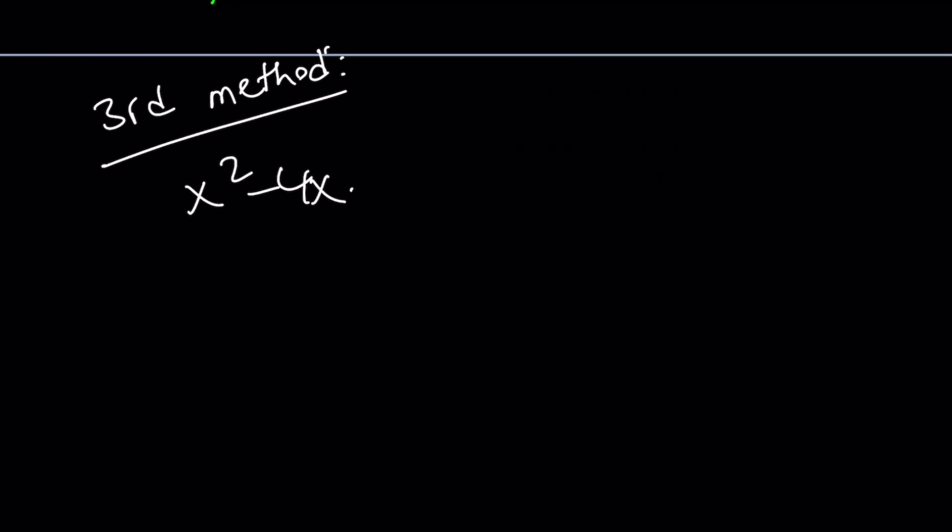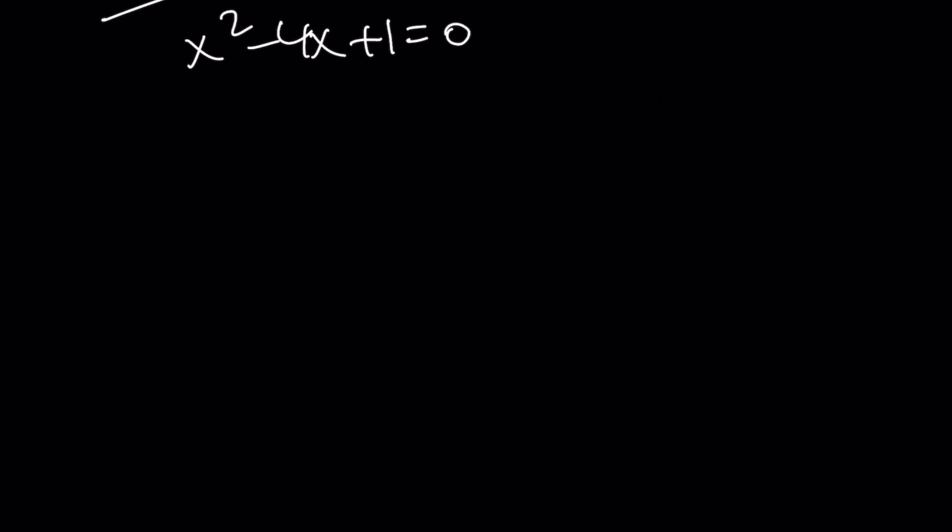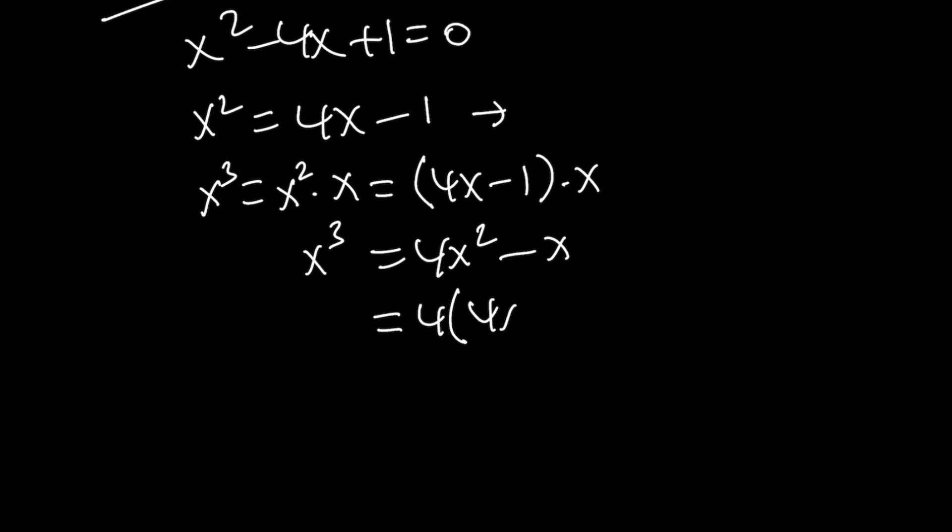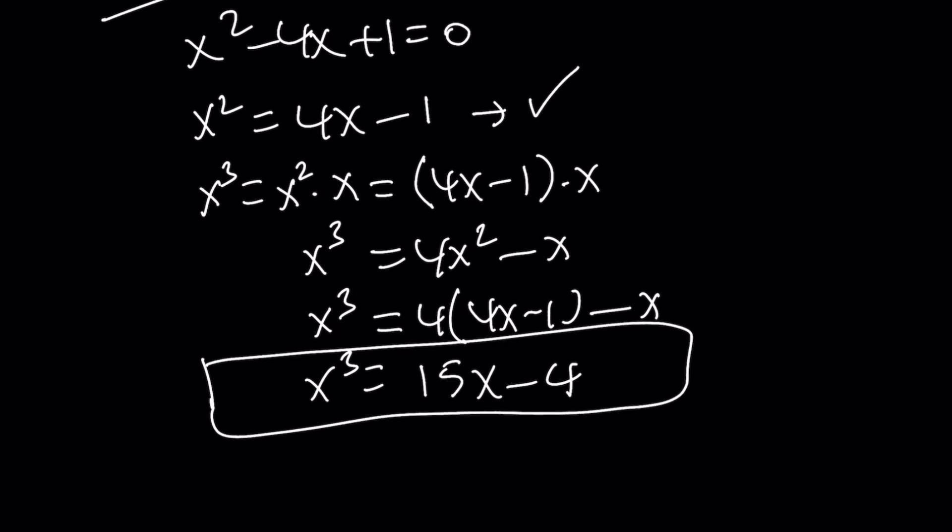So here's the third method. Our original equation says x squared minus 4x plus 1 equals 0. From here, I would like to isolate x squared. x squared can be written as 4x minus 1. And then I just want to evaluate x cubed by using this. x cubed is just going to be x squared times x. But x squared can be replaced with 4x minus 1 multiplied by x. That gives you 4x squared minus x, which is x cubed. And eventually, you can replace x squared with 4x minus 1 again. So x cubed becomes 16x minus x, which is 15x minus 4.